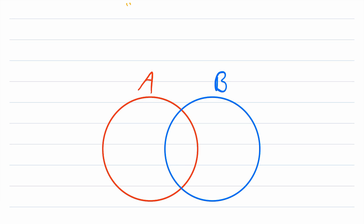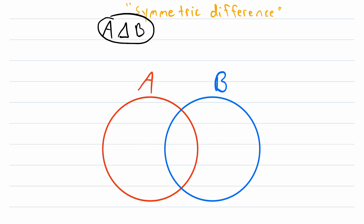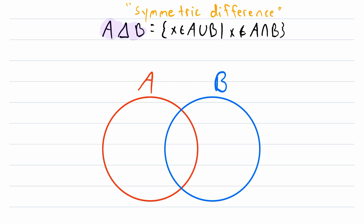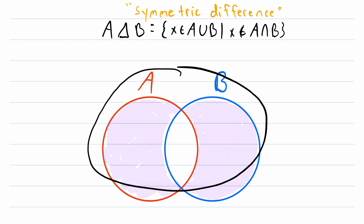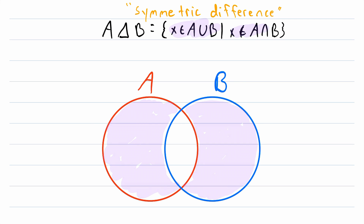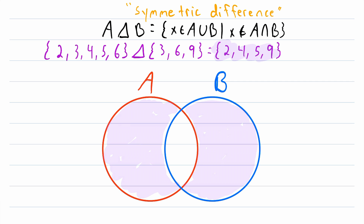The last operation we are talking about is the symmetric difference. The symmetric difference of two sets A and B is the set containing all elements that are in the union of A and B but are not in the intersection of A and B. This means it contains all of A and B except for their common elements. In Venn diagram form, the symmetric difference looks like both sets shaded except for their overlapping intersection. You can see that the symmetric difference contains all elements in the two sets except for their common elements.